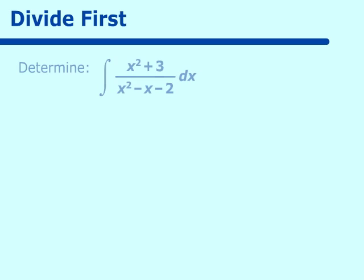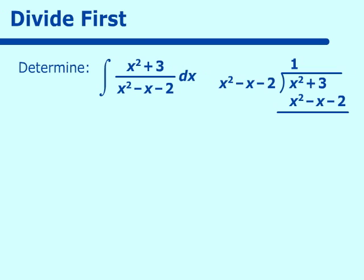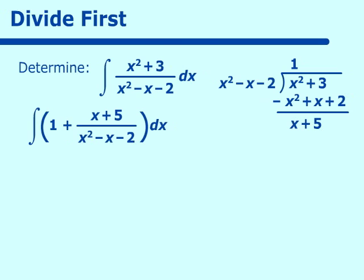In this next problem we have to divide first using long division. We divide x squared minus x minus 2 into x squared plus 3. x squared goes into x squared one time. After performing the long division and changing signs, we are left with a remainder of x plus 5. So the integral becomes the integral of 1 plus (x plus 5) over (x squared minus x minus 2), dx.